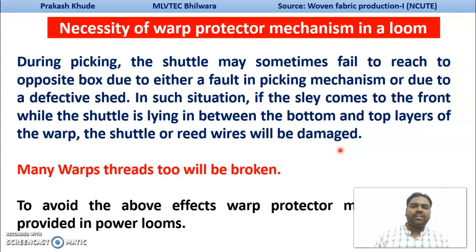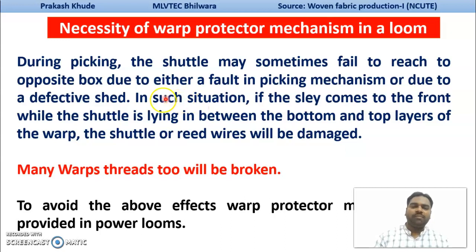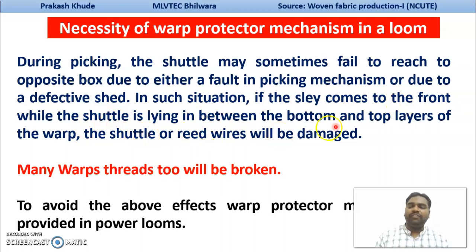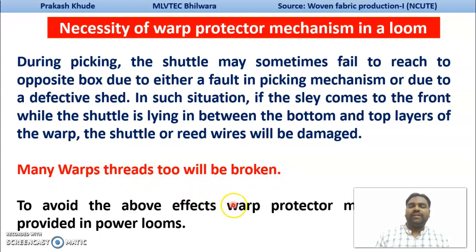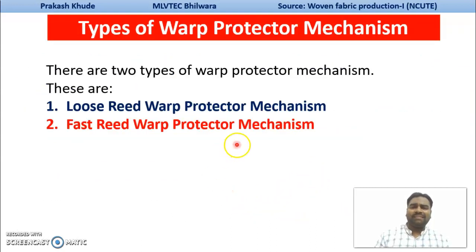So what is the necessity of your warp protector mechanism in your loom? During picking, when the shuttle may fail to reach the other opposite shuttle box — that could be due to a fault in your picking mechanism or due to defective shed formations — under these situations, if the shuttle fails to reach the other shuttle box, the shuttle remains between your top and bottom layer of your warp. That will cause damage to the reed wires and shuttle, and many warp end thread breakages. To avoid these effects, the warp protector mechanism has been provided on your loom.